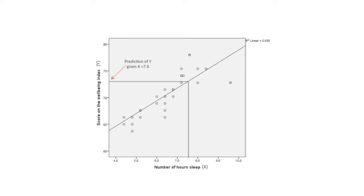Now the difference between the actual wellbeing score, which is y, and the predicted wellbeing score, y hat, is the error in prediction.